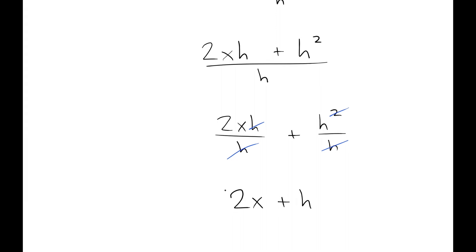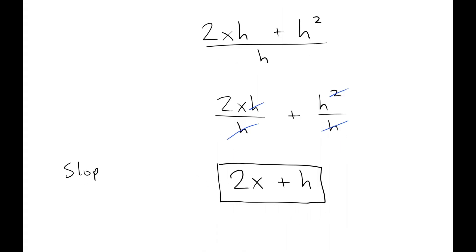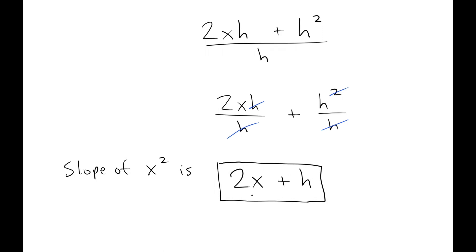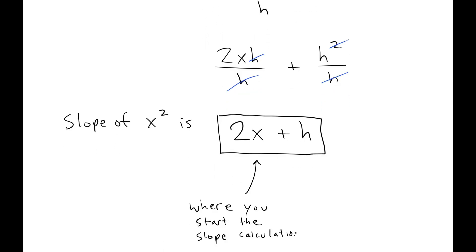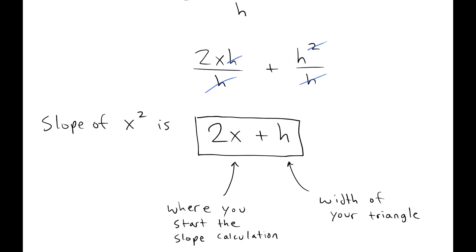So what this shows is that the slope of the parabola, the slope of x squared, is dependent on where you're located. So the x tells you where you start. And it also depends on the width of your triangle, even. So very different from a single straight line.